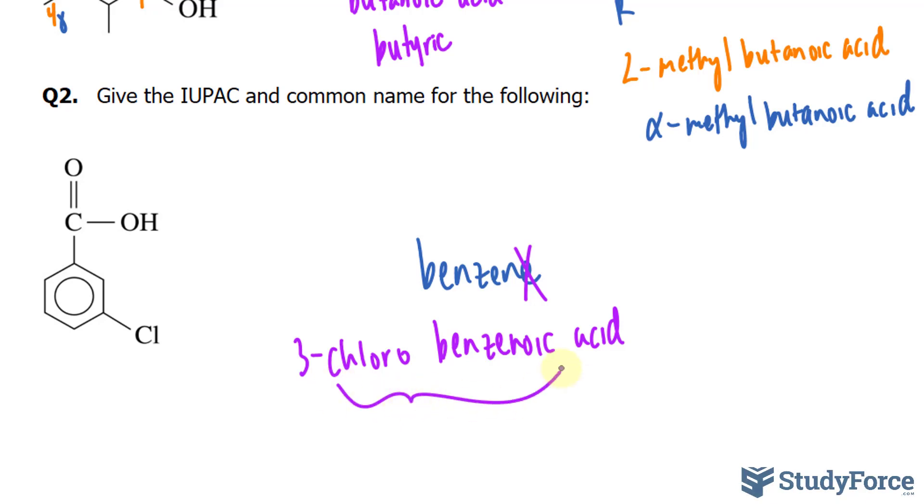That's the IUPAC name. The common name introduces the letters M, P, and O for meta, para, and ortho. So when you have a substituent two carbons away, in our case here we have one carbon and another carbon from this one,